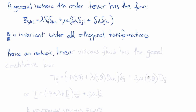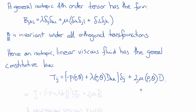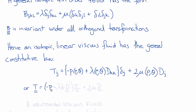Hence, going back to our constitutive equation, we can now substitute this form of B_ijkl into our constitutive equation for stress in a Newtonian viscous fluid and obtain: T_ij is equal to minus p, as a function of rho and theta, plus lambda, as a function of rho and theta, times D_kk — the trace of the rate of deformation tensor — all times delta_ij, plus 2 times mu, also a function of density and temperature, times D_ij. Or, in direct notation, the stress tensor T is equal to minus p plus lambda times the trace of D, all times I the identity tensor, plus 2 times mu times the rate of deformation tensor D.